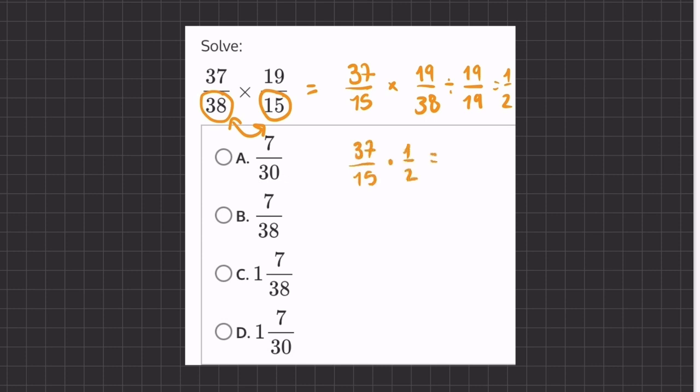So, now let's multiply right across. We have 37 over 30. Now, in order to simplify this into a mixed number,